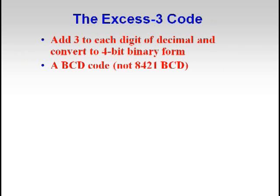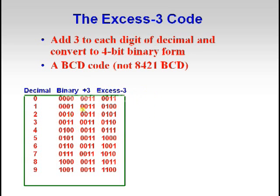Now let us see the X3 code. Add 3 to each digit of decimal and convert to 4-bit binary form — it uses ABCD code, not 8421 BCD. For example, decimal 0 plus 3 equals 3, and 3 in binary is 0011, so the X3 code for 0 is 0011. This is how X3 codes are represented.